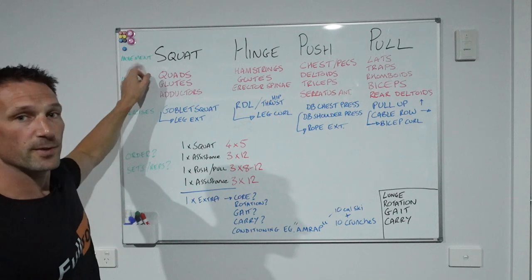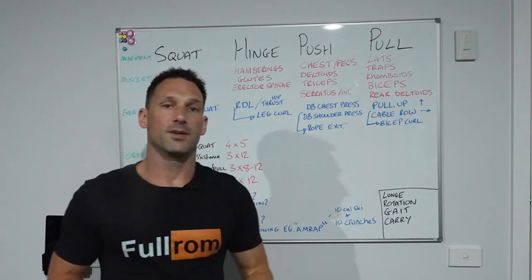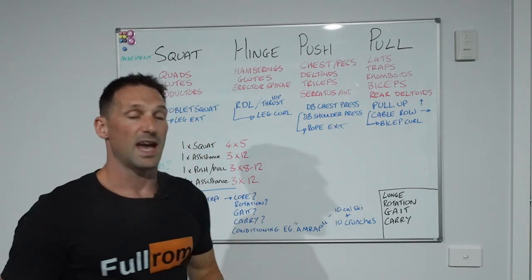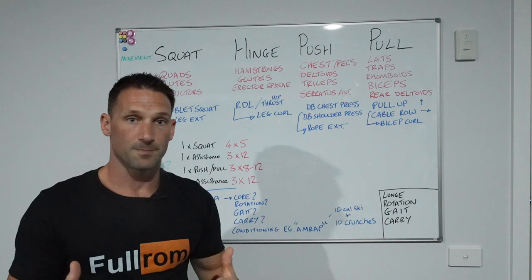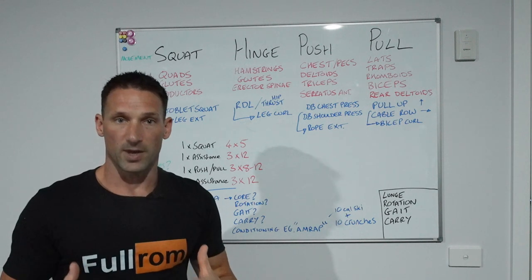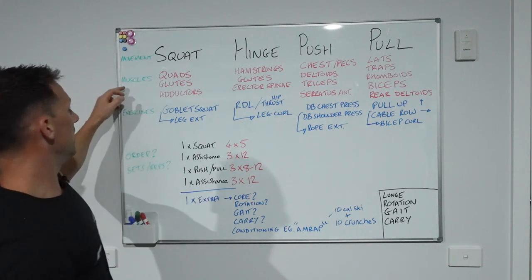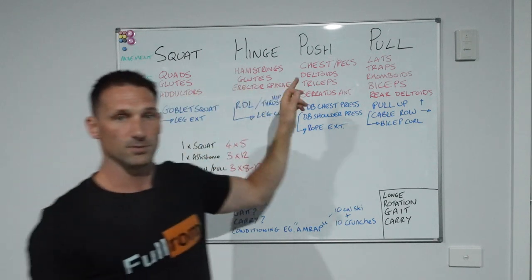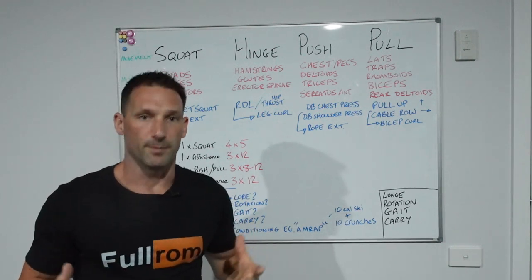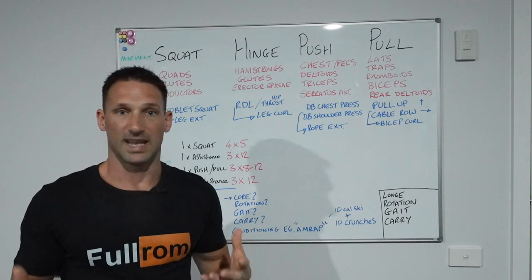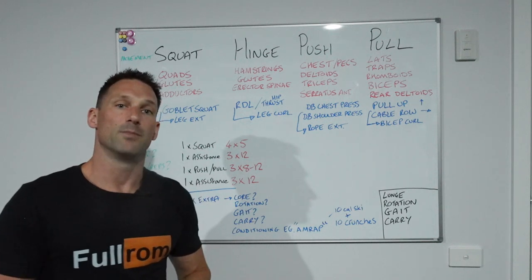Starting at the top: movement patterns — squat, hinge, push, pull. These are fundamental movements that your body needs to be able to do. When we train all of these fundamental movement patterns and all the different variations, this enables us to build full body strength and train all the muscle groups of the body in equal amounts. Underneath, we have some of the muscles involved in red. This is just an overview of some of the main muscle groups we may use in each movement pattern.